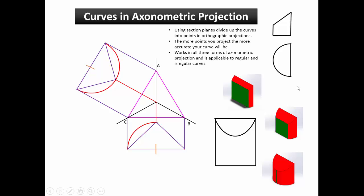This video will deal with constructing curves in axonometric projection. To construct curves, both regular and irregular, in axonometric projection you must divide the curves in two of your orthographics into points and then find these points in your pictorial.